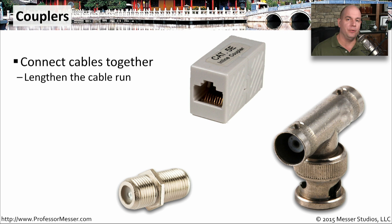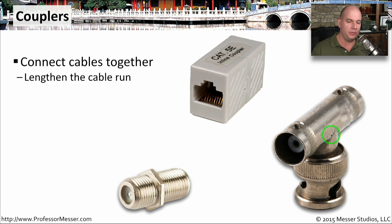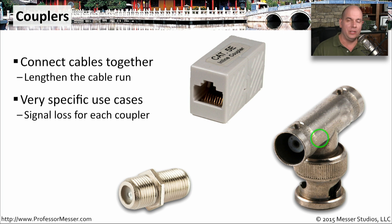Occasionally you'll be running a cable and find it's just a little bit too short. It would be nice to combine cables together to extend the length, and you can do exactly that with a coupler — for ethernet, an F connector for coax, or a BNC connection that you need to extend. However, every time you put a coupler in line, you're losing signal across that link. If you're going a very long distance, the signal loss may be too much to make it from end to end.